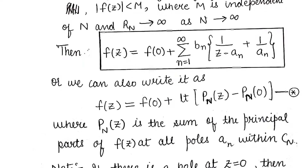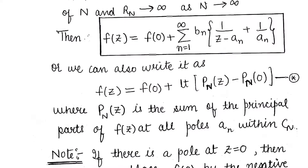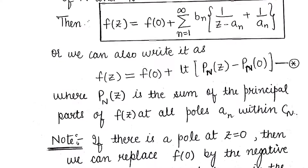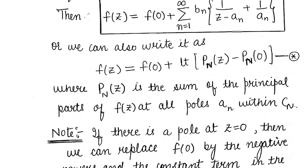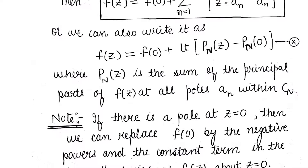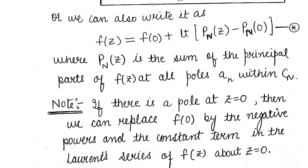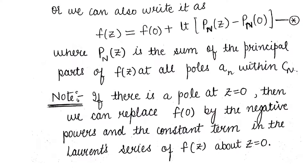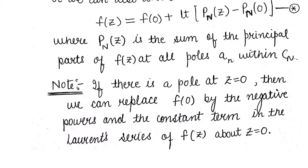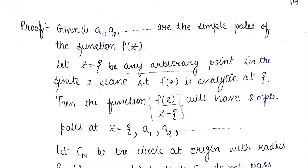Under these three assumptions, we will prove that f(z) can be written as f(0) + Σ bₙ [1/(z − aₙ) + 1/aₙ], or equivalently as f(z) = f(0) + lim_{n→∞} [Pₙ(z) − Pₙ(0)], where Pₙ(z) is the sum of the principal parts of f(z) at all poles aₙ within Cₙ. Now let us start the proof of the theorem.